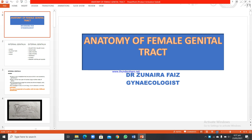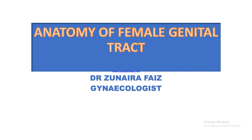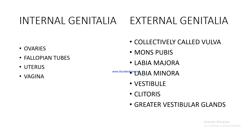Today's lecture is on the anatomy of the female genital tract. The female genital tract consists of internal genitalia and external genitalia. Internal genitalia includes the ovaries, fallopian tubes, uterus, and vagina.